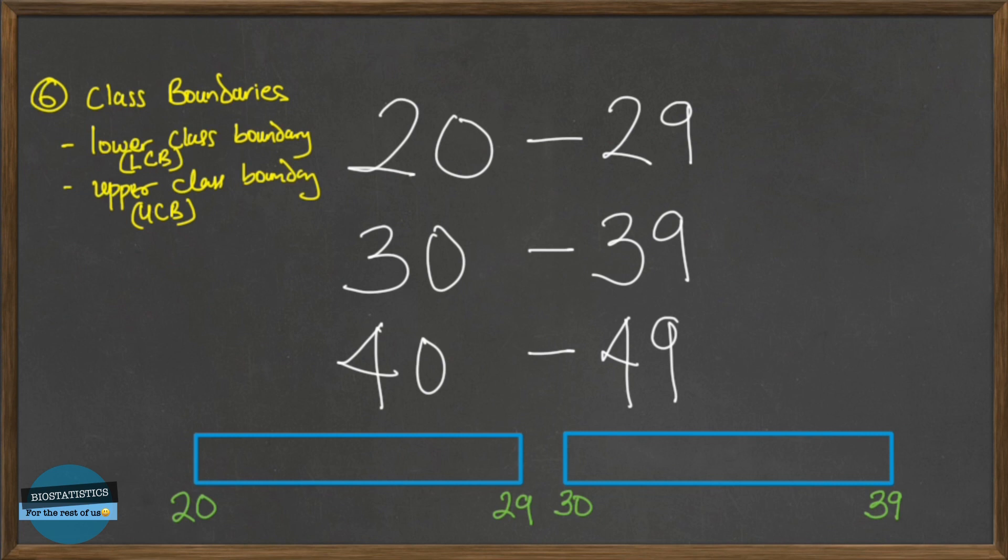So this space that is in between these two groups is a potential for disaster. It can cause third world war. So we need to separate this space and that's the boundary. So this is the boundary for the 20 to 29 class and the boundary for the 30 to 39 class. So on this side is the upper class boundary for the 20 to 29 class and on this other side is the lower class boundary for the 30 to 39 class.